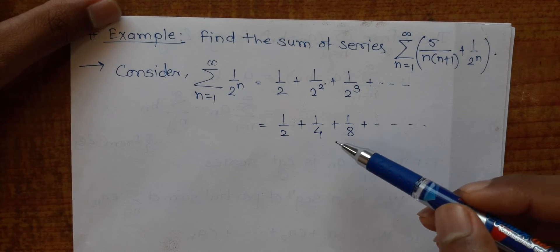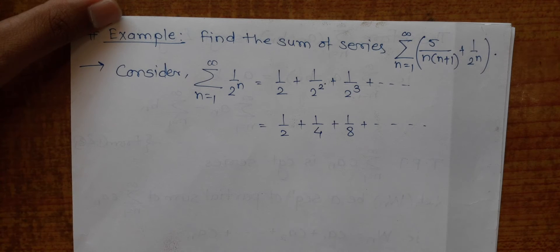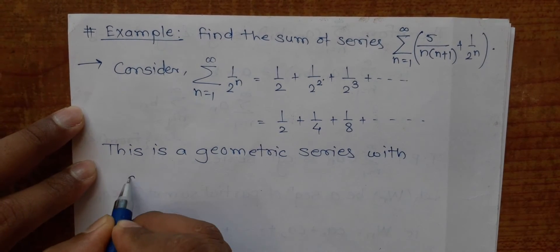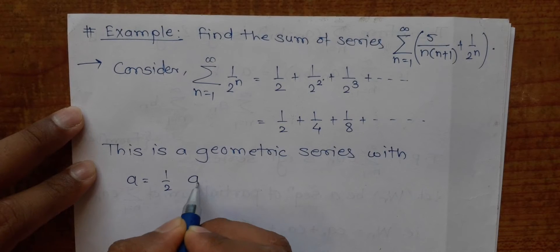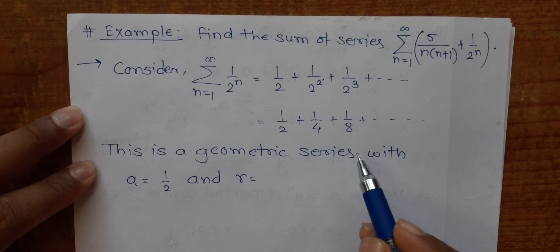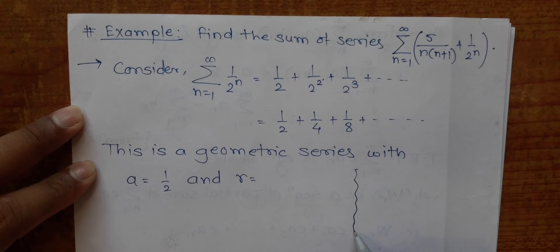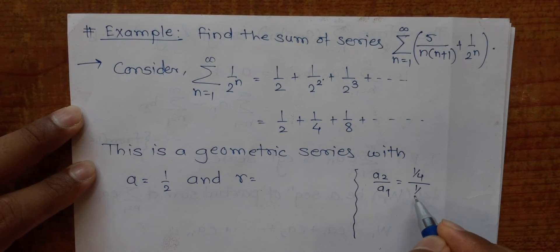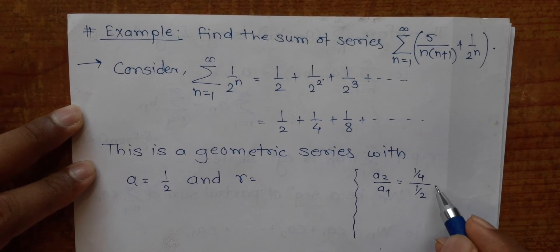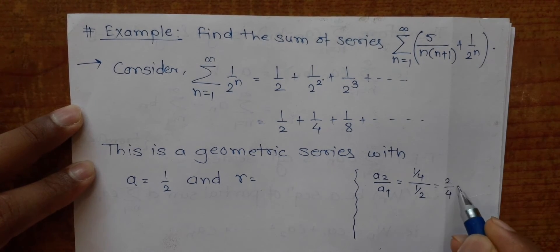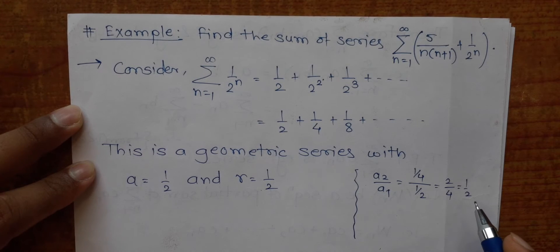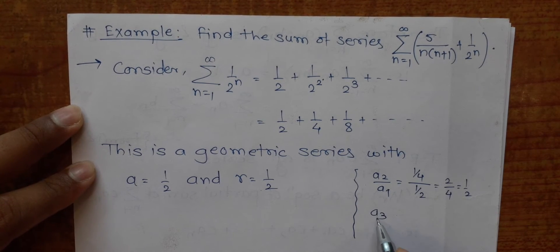This is a geometric series with first term a = 1/2. To find the common ratio r, I calculate a₂/a₁: (1/4)/(1/2). The 2 in the denominator of the denominator shifts to the numerator, giving 2/4 = 1/2. So the common ratio r = 1/2. To confirm, we can also check a₃/a₂.